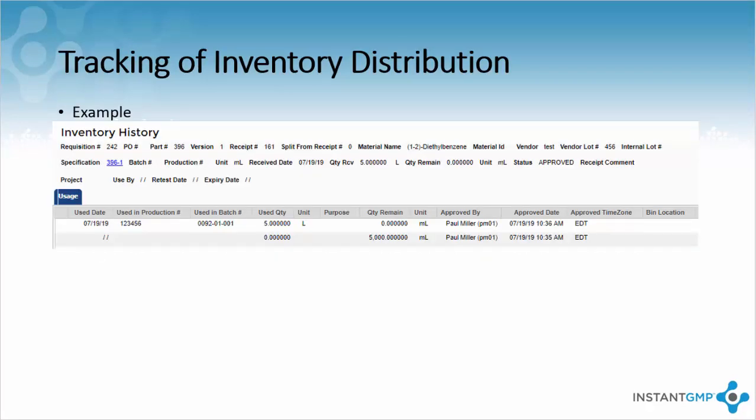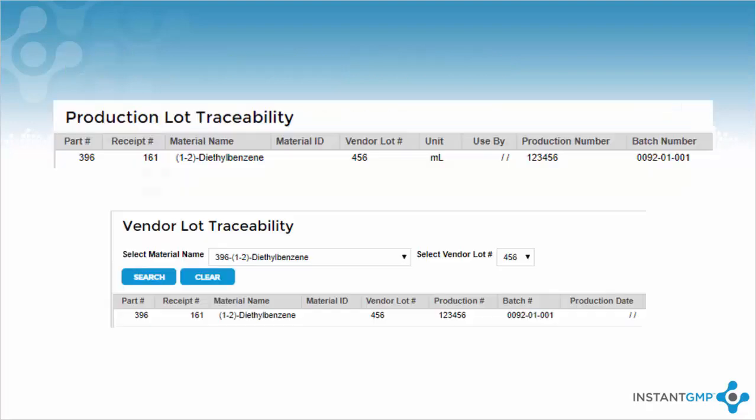This is an image of the inventory history pertaining to one receipt of a material. The software will track every instance that product was used, removed, added, or shipped to keep you aware of current inventory levels. A different perspective is the production lot traceability, which allows you to see all materials used in one batch. The other is vendor lot traceability, which allows you to see all site batches that used one vendor lot across your site. Both are extremely useful when determining your product impact if a vendor sends a recall to your site.